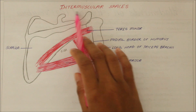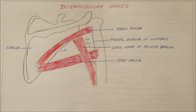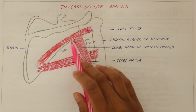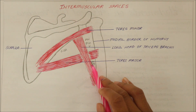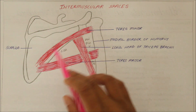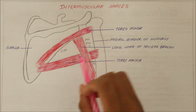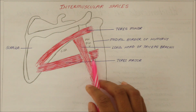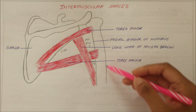Welcome to another video on intermuscular spaces. We have three main intermuscular spaces: the quadrangular space, the upper triangular space, and the lower triangular space. Before going into details of these spaces, let me introduce the structures. This is the scapula, this muscle is the teres minor, this is the teres major, this is the long head of the triceps, and this is the humerus bone.